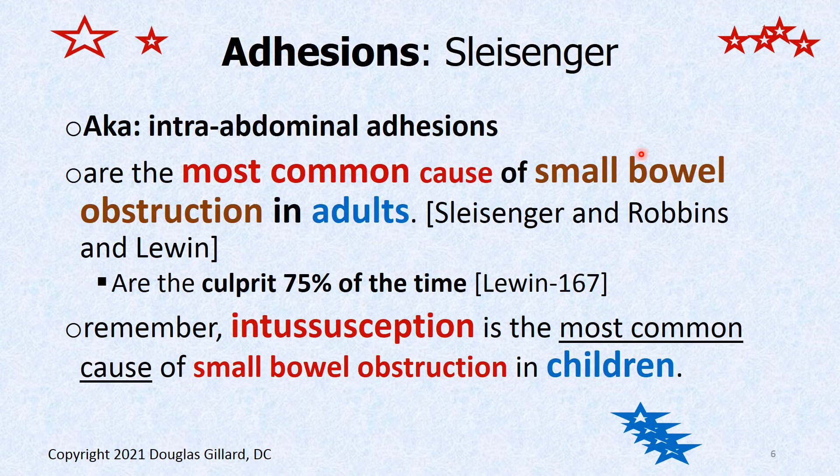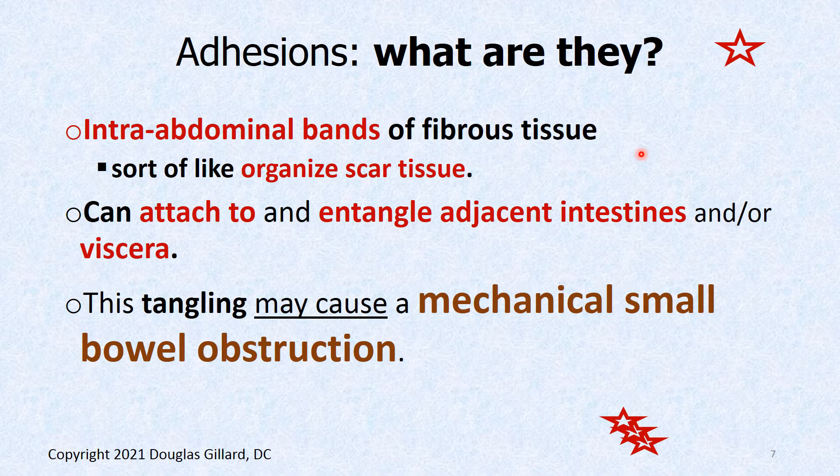Now let's get to some new stuff. This is a good time to talk about adhesions, which are the number one cause of obstruction in adults. 75% of the time, if someone over age 18 gets a small bowel obstruction, it's because of adhesions. In children, the culprit was intussusception. Adhesions are bands of collagen — basically fibrous tissue that spider-webs through the peritoneal cavity and can entangle the free-moving intestines, causing them to tie up in a knot.